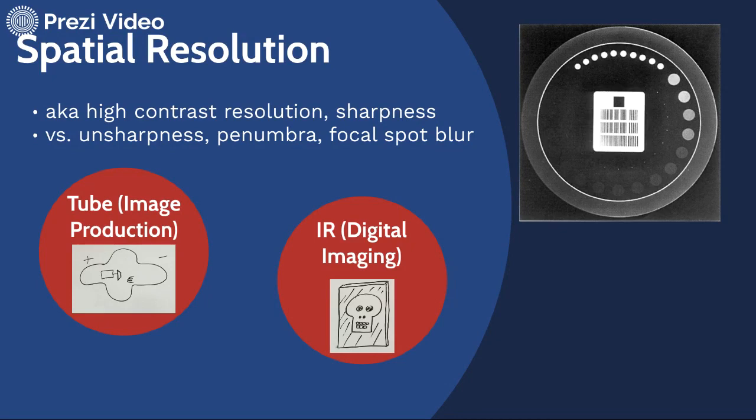Spatial resolution has a bunch of different ways that we might talk about it. We might talk about it as high contrast resolution. We might also refer to it as sharpness, and sharpness isn't actually a measurable term, but we sometimes compare it versus unsharpness or penumbra, and these are actually measurable geometrical things. They oftentimes are under the umbrella of what we call focal spot blur. So let's talk about that from the standpoint of the x-ray tube.